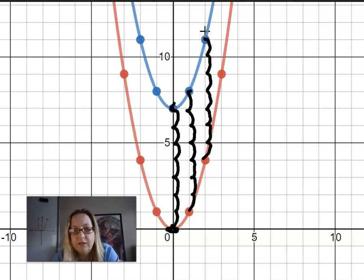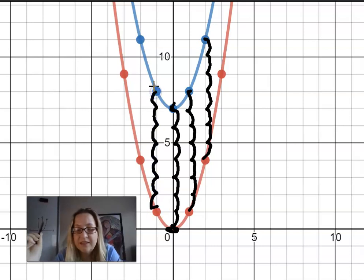So every single time, each point is just moving up 7 units. It's a shift of 7 units.